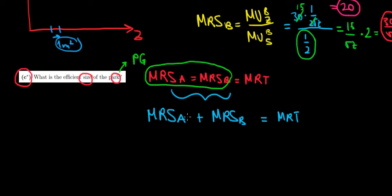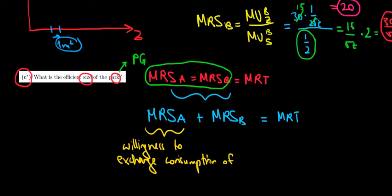The marginal rate of substitution that we found out in the previous video is showing us the willingness to exchange private consumption of sandwiches for public consumption of the park. Let me just write that real quick. That's a willingness to exchange consumption of private good for public good.